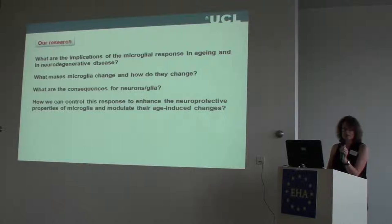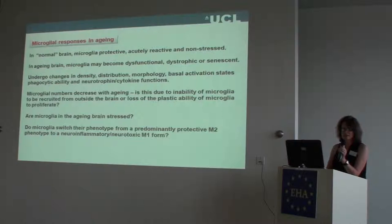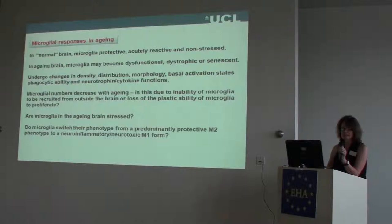We want to find out what makes these cells change, what are the consequences for their interactions with neurons and glia, and how we can control this change to allow them to be protective. Years ago I remember somebody saying they're 'little bags of poison,' but really, you don't develop with these cells in your brain to be toxic. They're there to surveil, to pick up any infections, to migrate to areas of damage, clean it out, and allow regenerative processes. But in ageing, they become what we call dysfunctional.